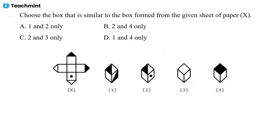Here we have an unfolded dice question. We have six sides, but one side is divided into four parts — one part is in one corner on each side. They're given options: when you fold this, which among the options is correct? Options one, two, three, four — among which is possible?